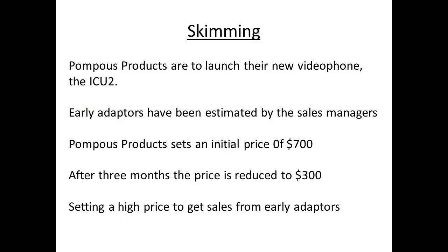When a new product is being introduced, companies can use particular strategies as the product comes onto the market. Pompous Products have a new videophone, the ICU2, which they launch with an initial price of $700, but then reduce the price after three months to $300. The aim is to get maximum sales from early adopters, a segment of the market who will pay highly for the latest technology as soon as it is released. The strategy is frequently used with electronics, but can sometimes lead to a poor image if there is a large gulf between the initial price and the eventual price, and particularly if the eventual price comes very soon after the initial high price offering. The process is called skimming the market.